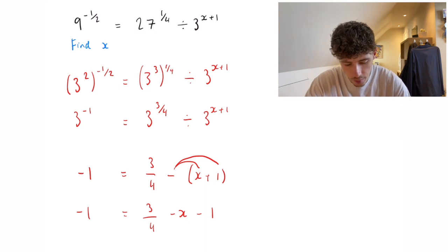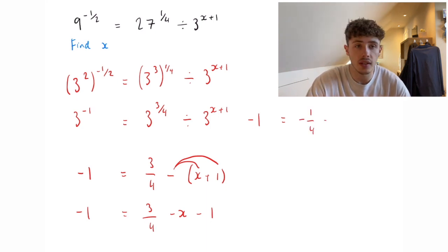From here, to tidy it up a bit, we're going to have minus 1 equals minus a quarter because we're doing 3 quarters take away 1 minus x.